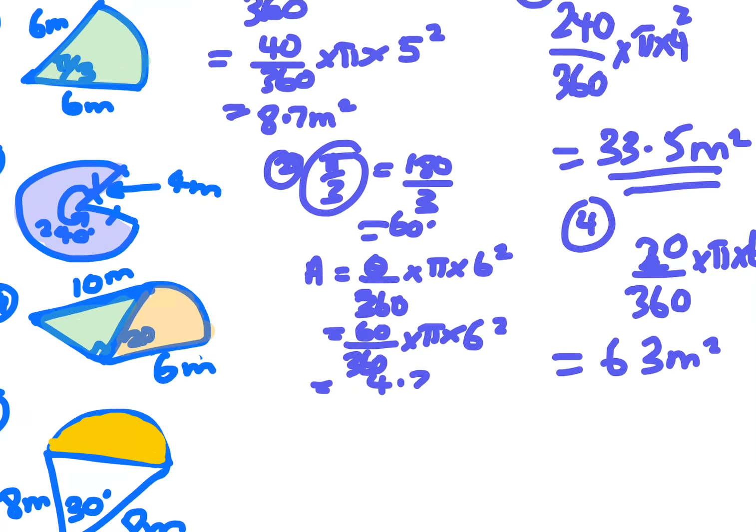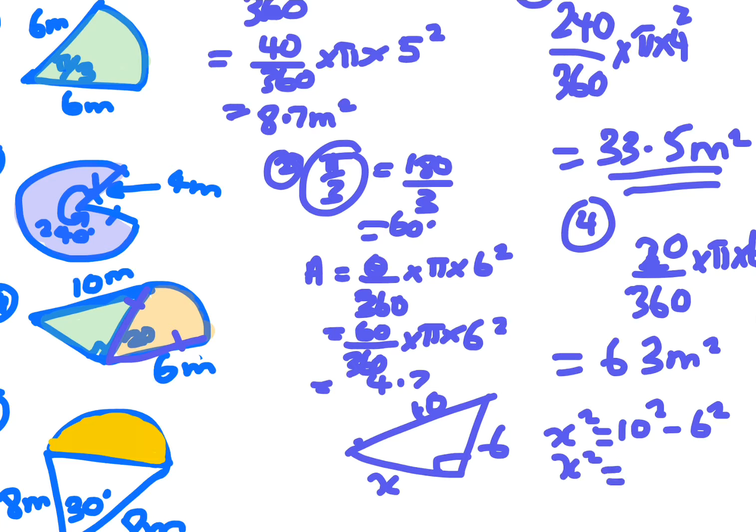Now that just gives you the orange part. So because this is a sector and they're equal to each other, when you go to the other part that's 6, that's 10, you need to use Pythagoras. If you know your 6-8-10 triangle you're all sorted. So we could do 10 squared minus 6 squared which is 64, square root 64 which is 8.